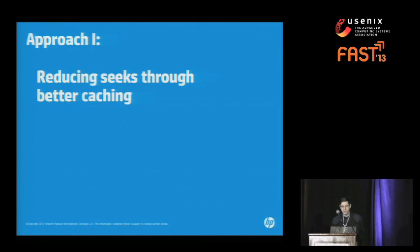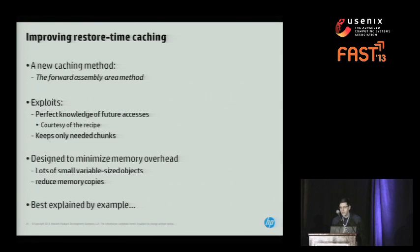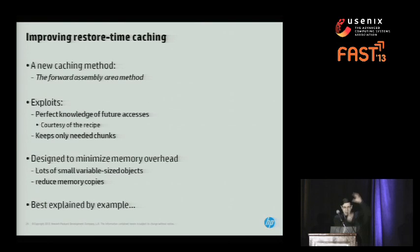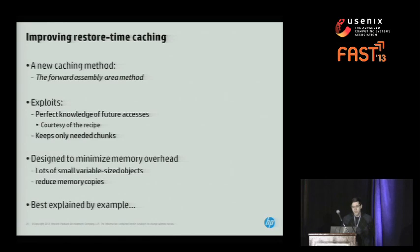I'm going to tell you about two approaches to improving restore speed. These are independent approaches that could be used separately or combined. The first one is designed to reduce seeks through better caching. In particular, we have a new caching method we call the forward assembly area method. It exploits the perfect knowledge of future accesses available to us courtesy of the recipe — we can peek ahead and figure out which chunks we're going to actually use in the future, so we don't have to keep chunks in our cache that are never going to be used.